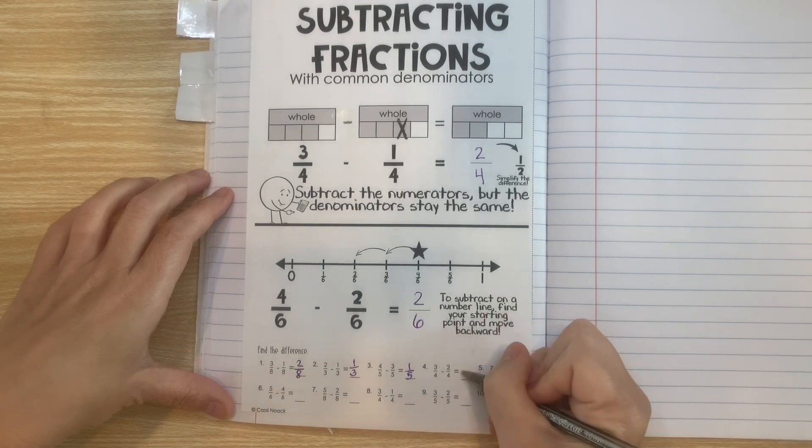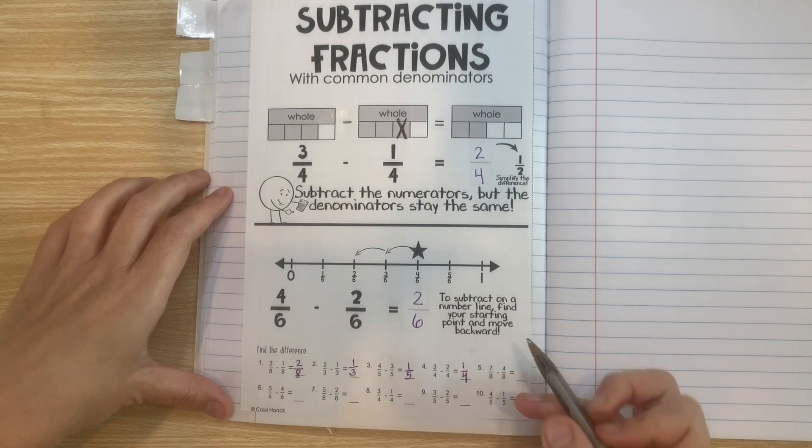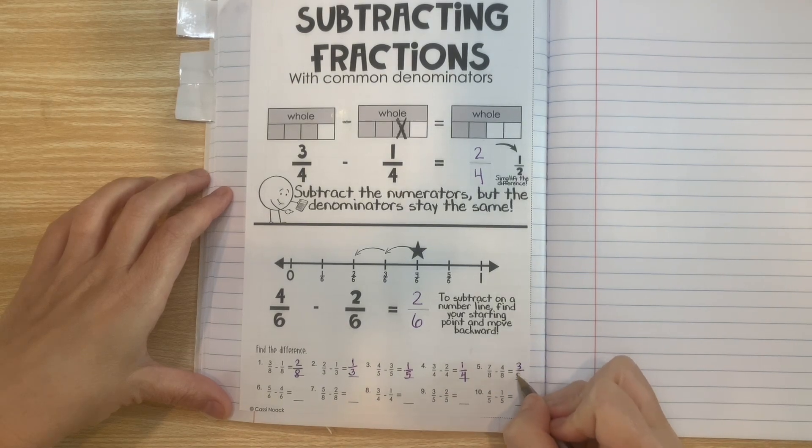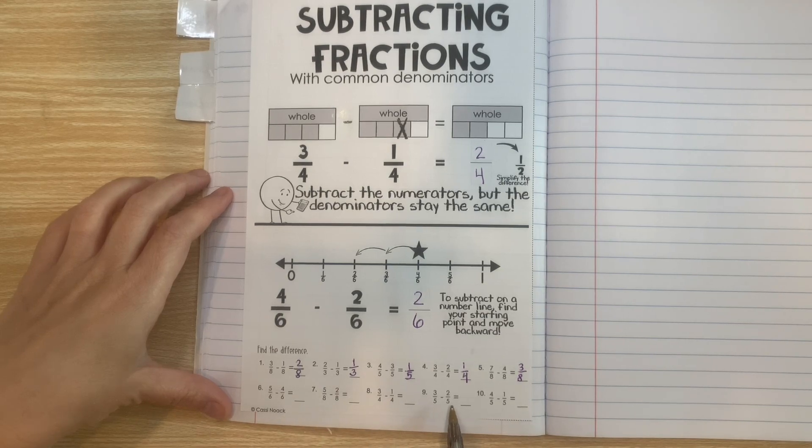3 minus 2 is 1 and the denominator stays the same. 7 minus 4 is 3 and the denominator stays the same. Now I want you to do the last ones on your own just for a little bit of extra practice but before we go let's talk about this question that was on the side of the notes.